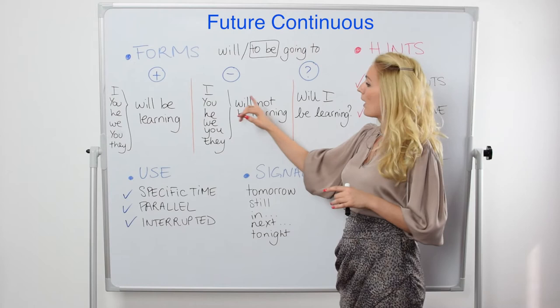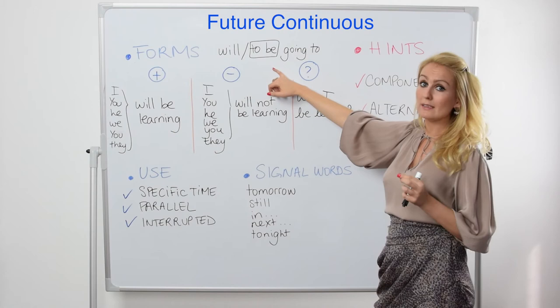For the negative, you have this form: 'I will not be learning,' or contracted: 'I won't be learning.' With 'going to': 'I am not going to be learning,' or contracted: 'I'm not going to be learning.'